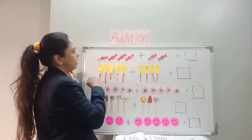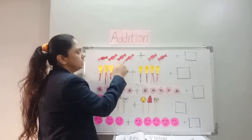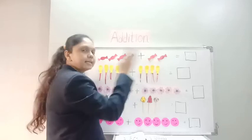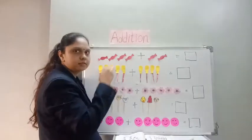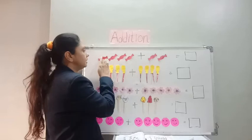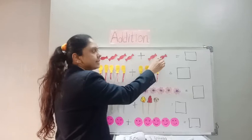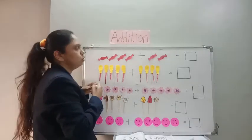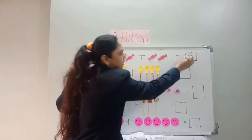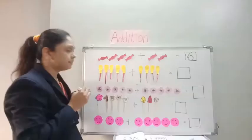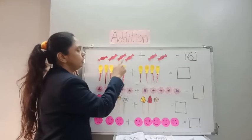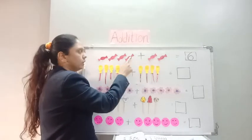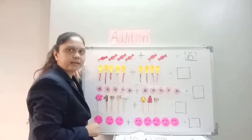Now here are some chocolates. How many chocolates? One, two, three, four. There are four chocolates, and someone gave two more chocolates. So they are added — it becomes more. So after four, how many do you have now? One, two, three, four, five, six. Total chocolates are six. So you have to write six in the box. Four chocolate plus two chocolate — after four: five, six. Total is six.